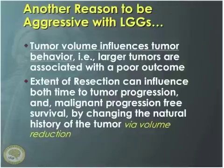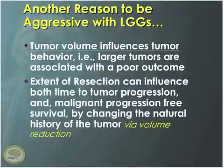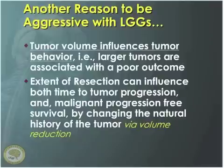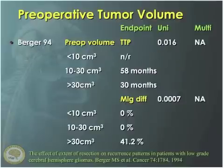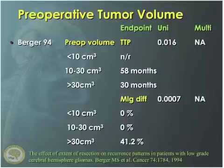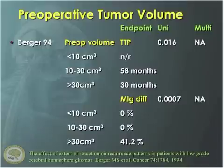Another reason to be aggressive has to do with tumor volume. The bigger the tumor, the more likely it is to be associated with a poor outcome. The cut point is somewhere around four centimeters or greater. The question is whether we can use surgery to promote an aggressive resection and thereby reduce the risk of malignant transformation via volume reduction. A study I published showed that as preoperative tumor volume increases, the likelihood of a shorter time to tumor progression and a higher rate of malignant transformation is greater — bigger tumors progress sooner.